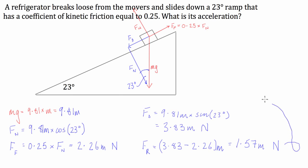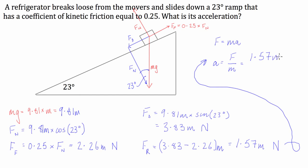To finish this off, we need to work out the fridge's acceleration. We know that force equals mass times acceleration, so acceleration equals force over mass. The force parallel to the plane is 1.57m divided by the actual mass of the object. The masses cancel out, and we get the acceleration of this fridge equal to 1.57 metres per second squared. Because this is a vector quantity, you also have to give a direction — down the ramp.